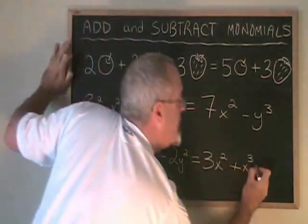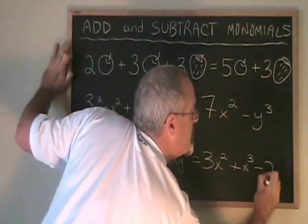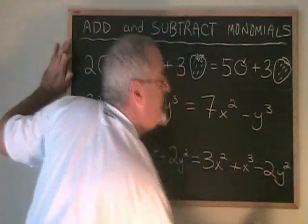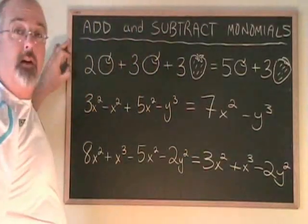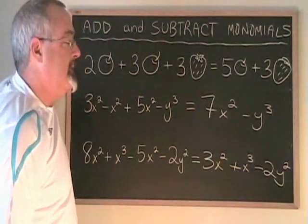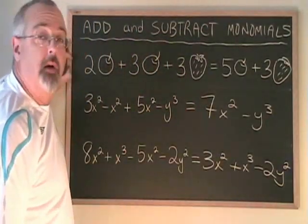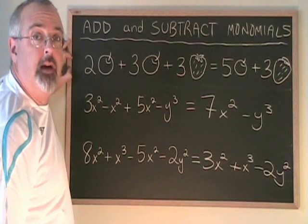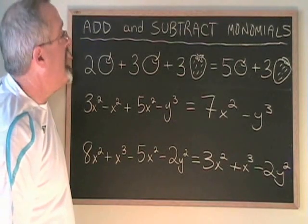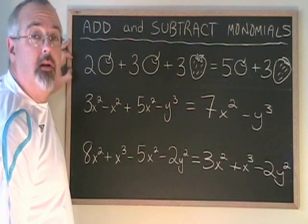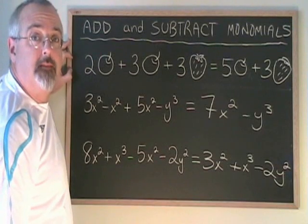The minus two y squared is also kept separate. Our final answer is three x squared plus x cubed minus two y squared. This is how you add and subtract monomials in a high school polynomials course.